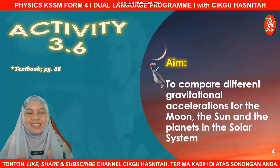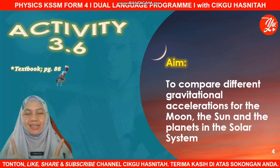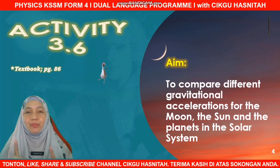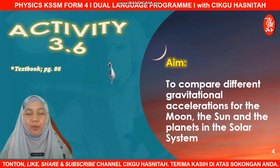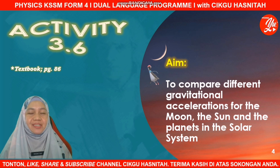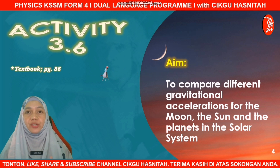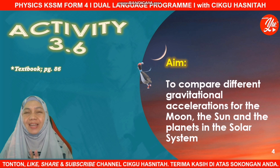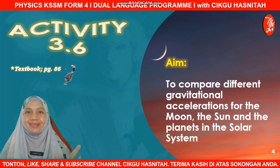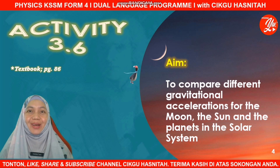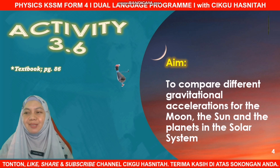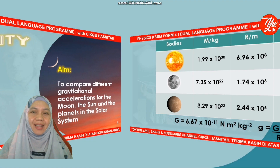Alright students, let us continue with the first activity for today. This is Activity 3.6, which you will find in your textbook on page 86. We are going to compare the difference in gravitational acceleration for the moon, the sun, and all other planets in the solar system.